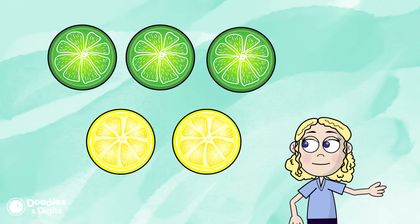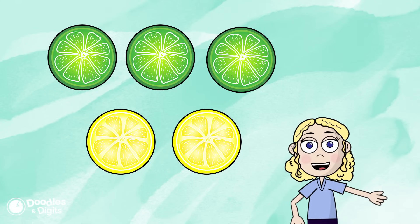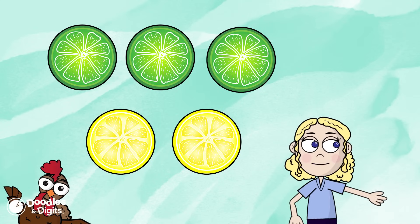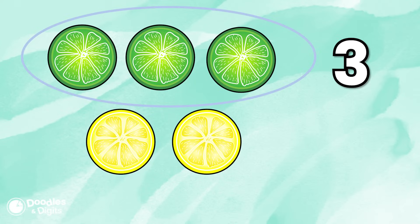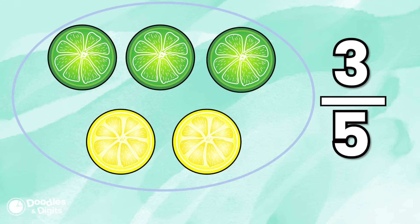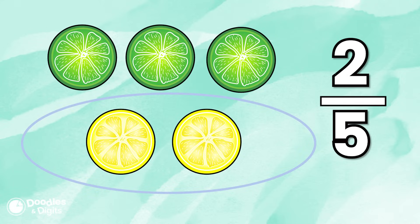You can also show fractions as a part of a group. Let's look at this picture right now. What fraction do you think this is showing? How do you think this represents a fraction? What do you notice? There are three limes. So in this group, three out of the entire group — which has five — are limes. You could also look at it the other way: two of the group are lemons, so two out of the five are lemons.